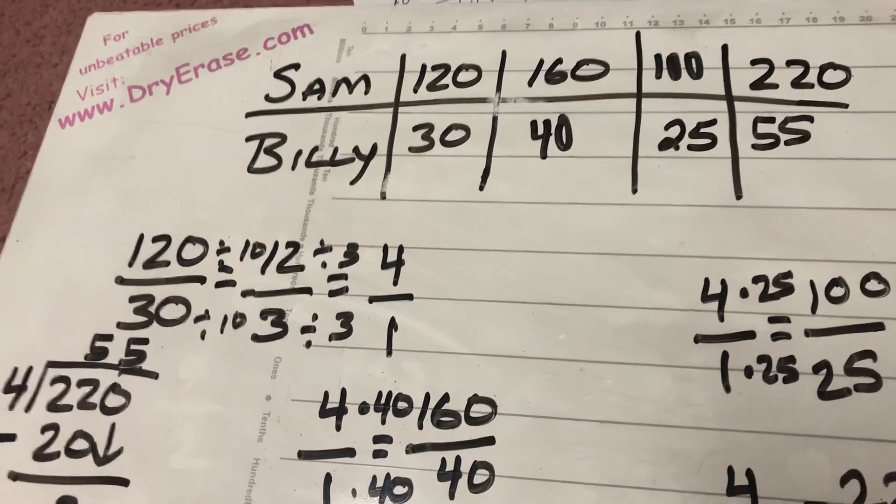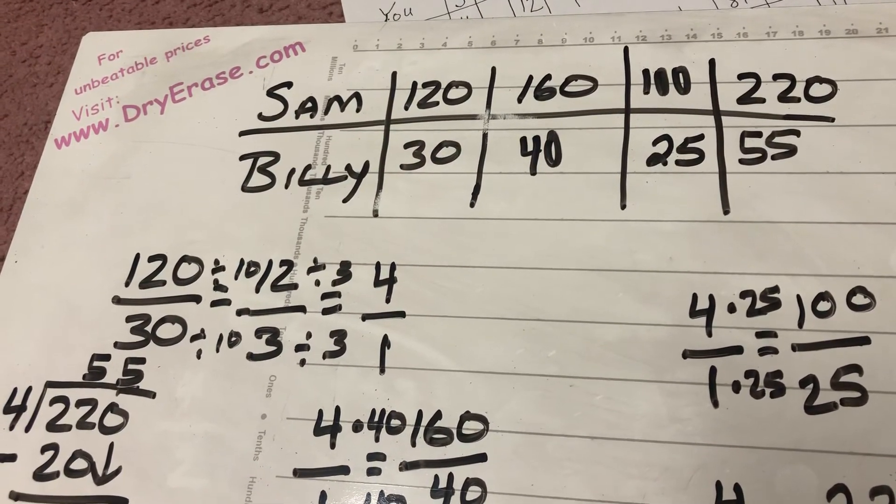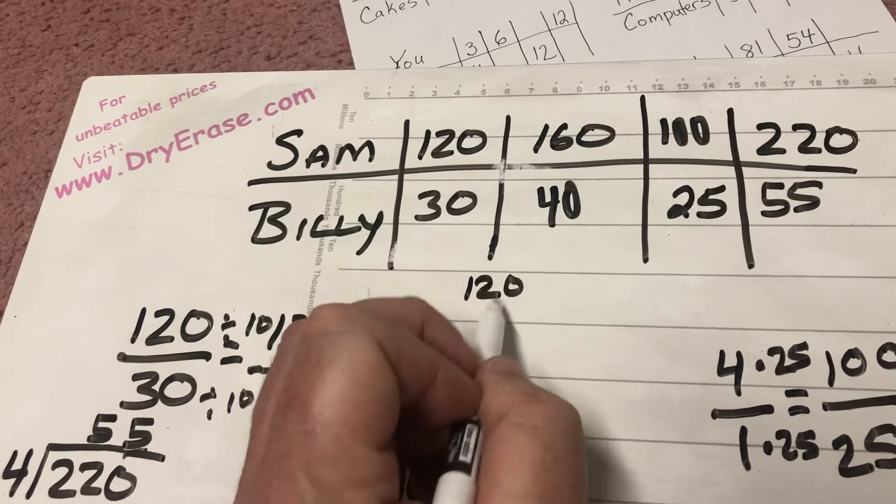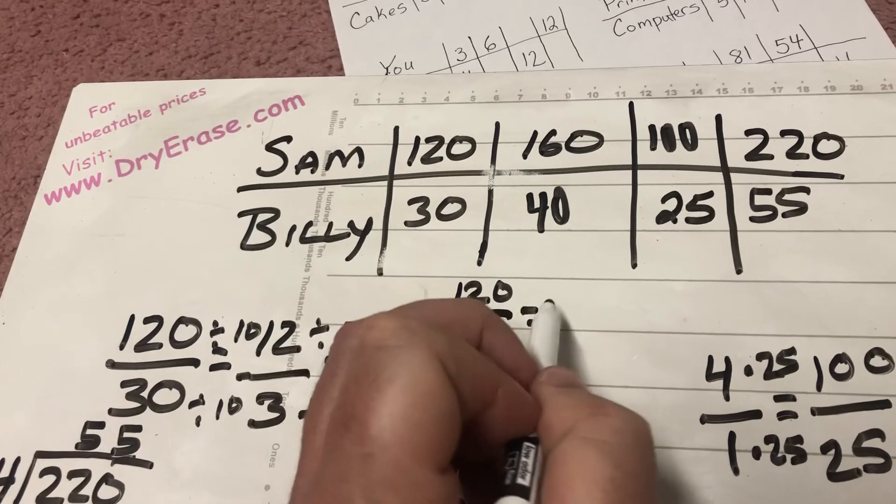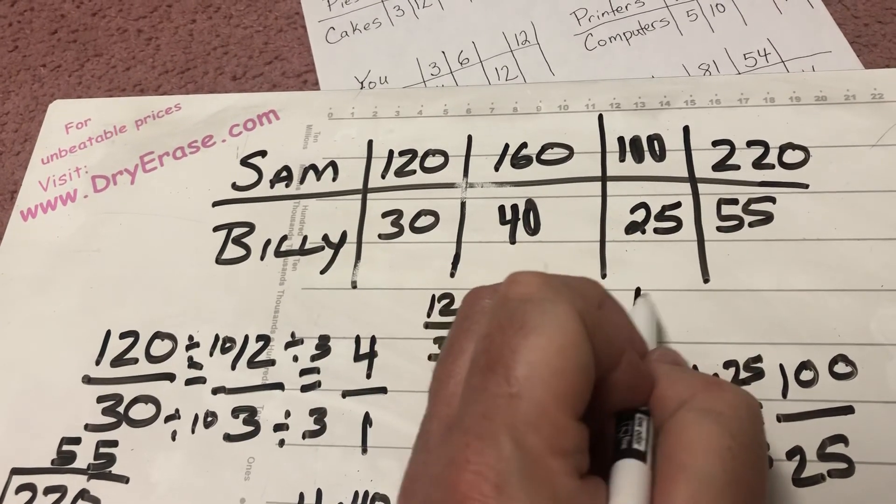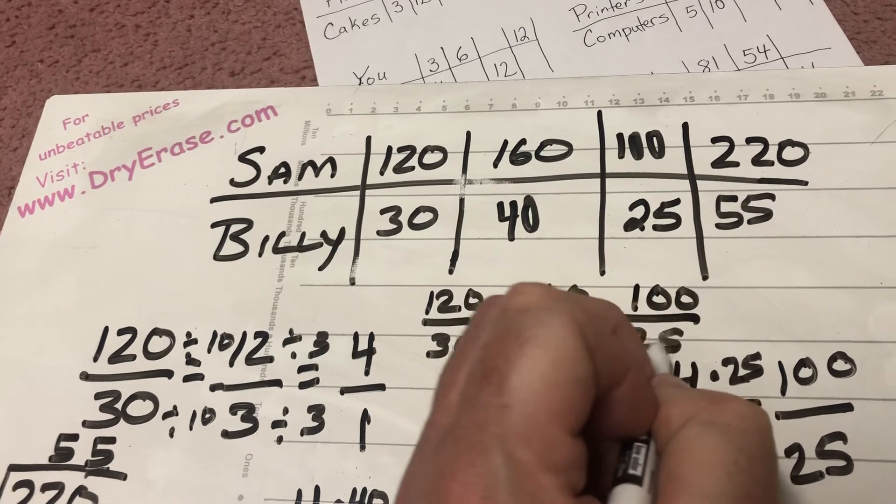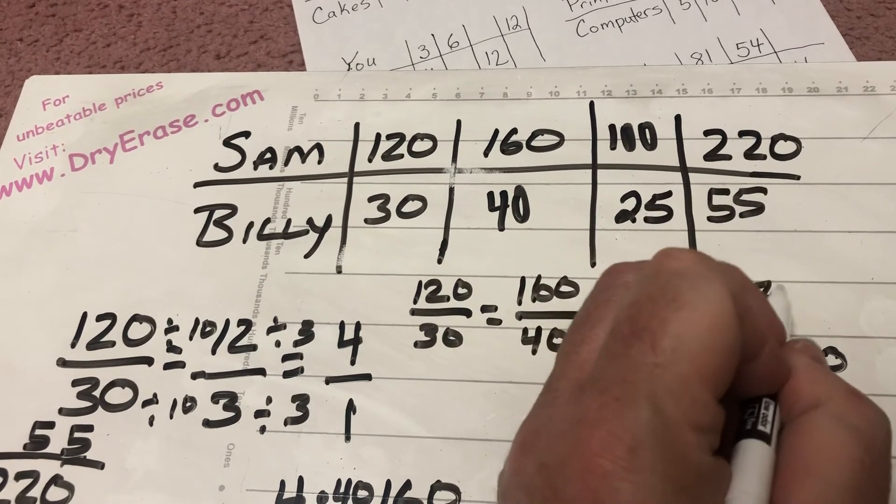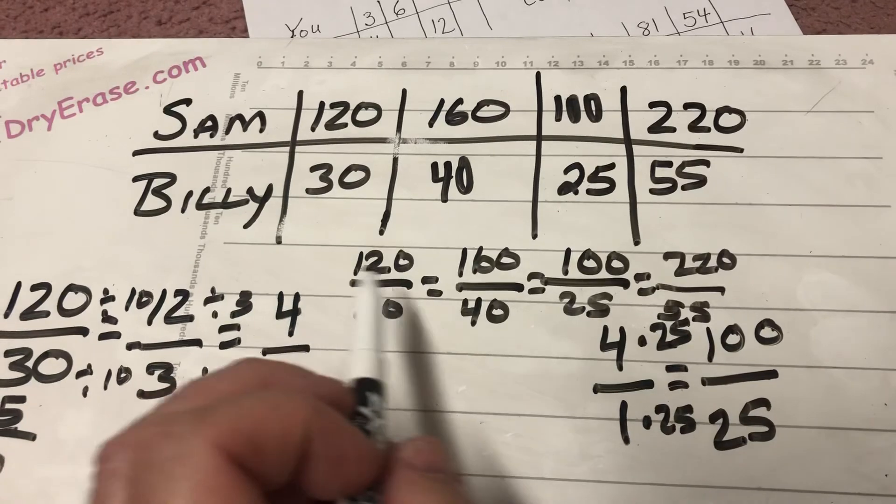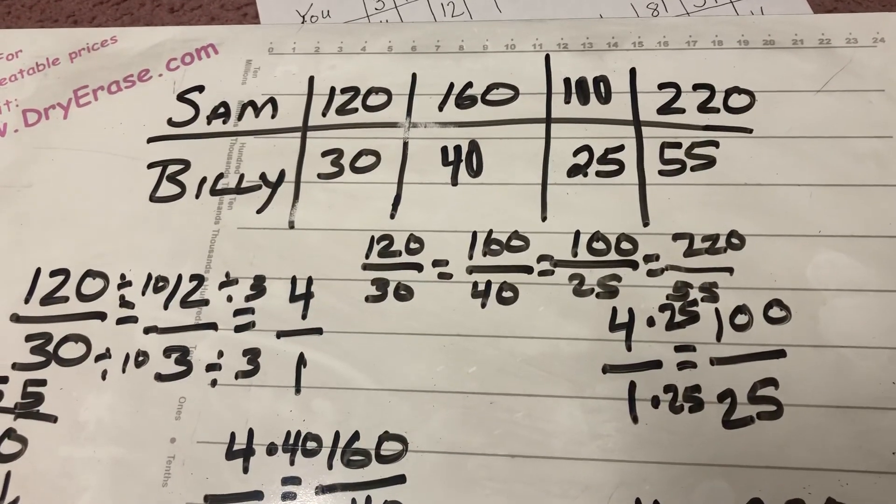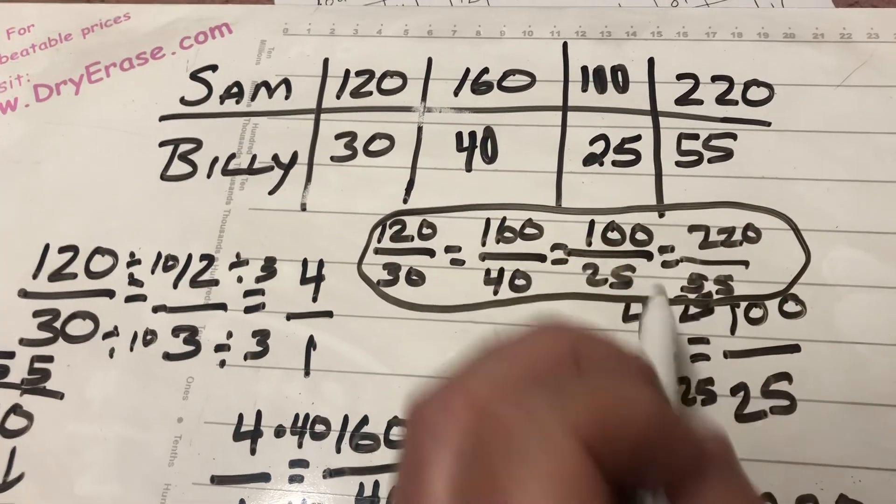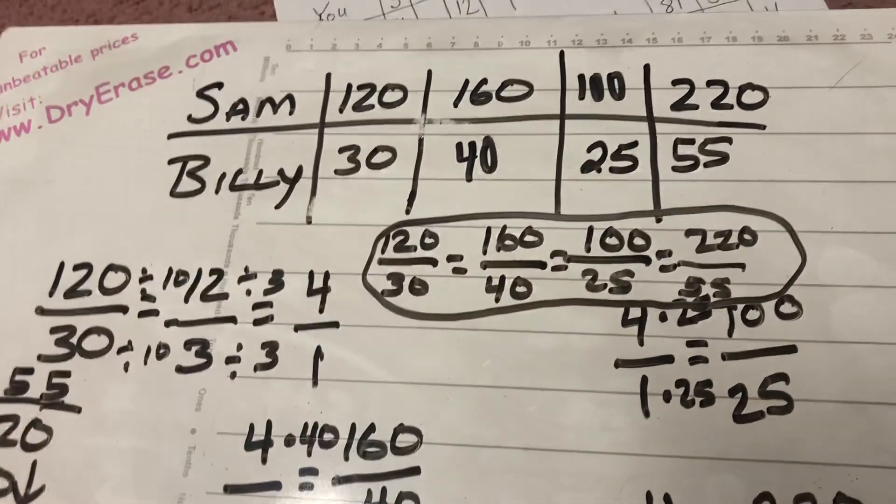But then we don't want to forget the part that says, then write the equivalent ratios. Well, my equivalent ratios here are going to be 120 over 30 equaling 160 over 40 equaling 100 over 25, which finally equals 220 over 55. And I just make a list of all those equivalent ratios, and I include that as part of my answer. But that's just merely copying the numbers that are there in the table.